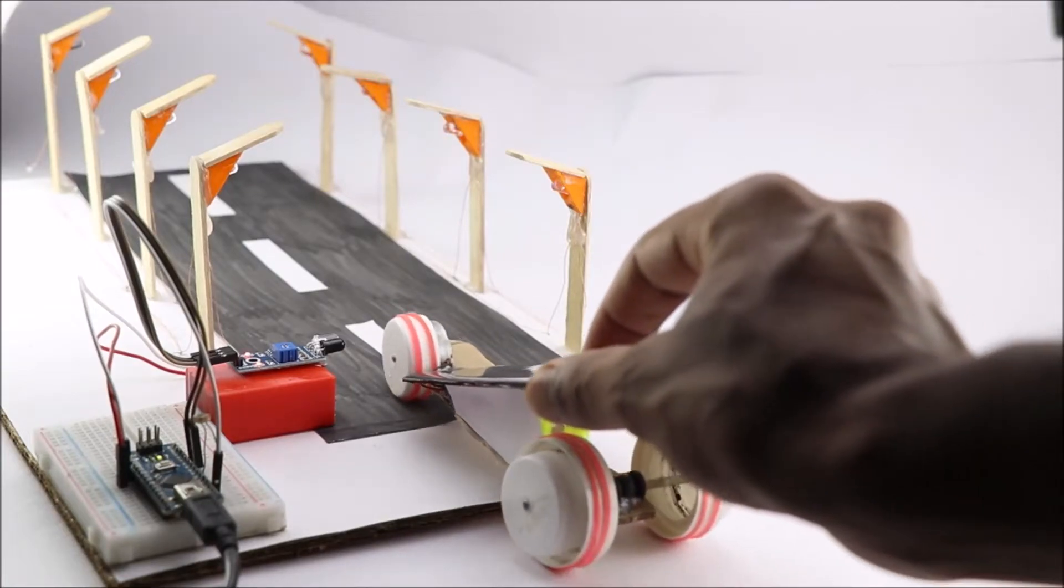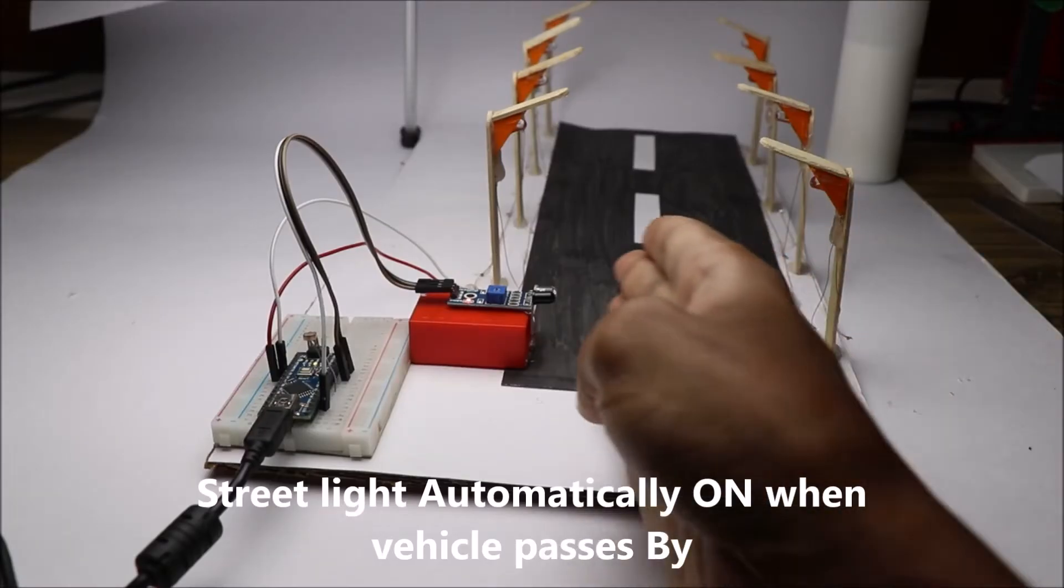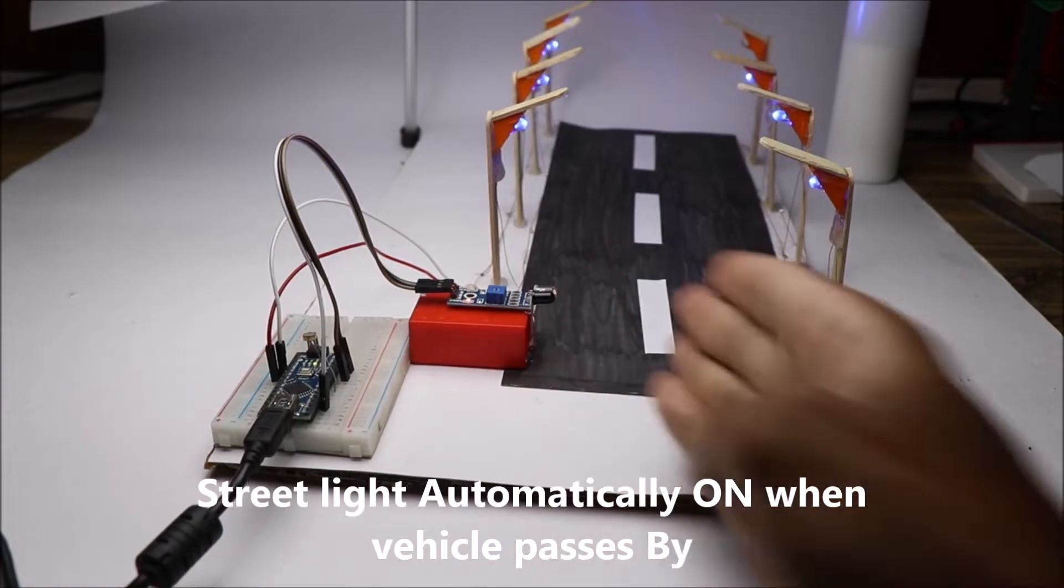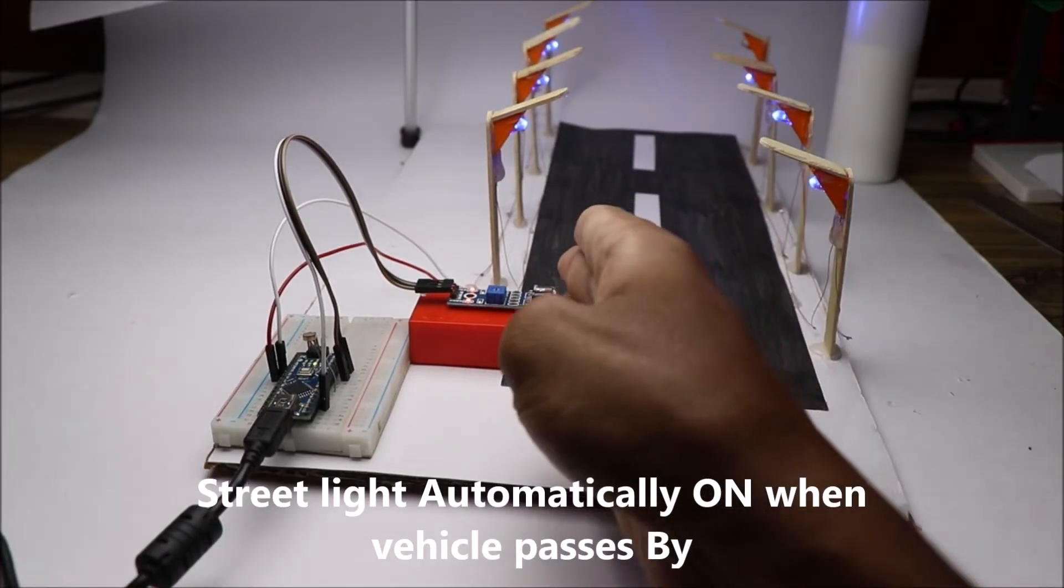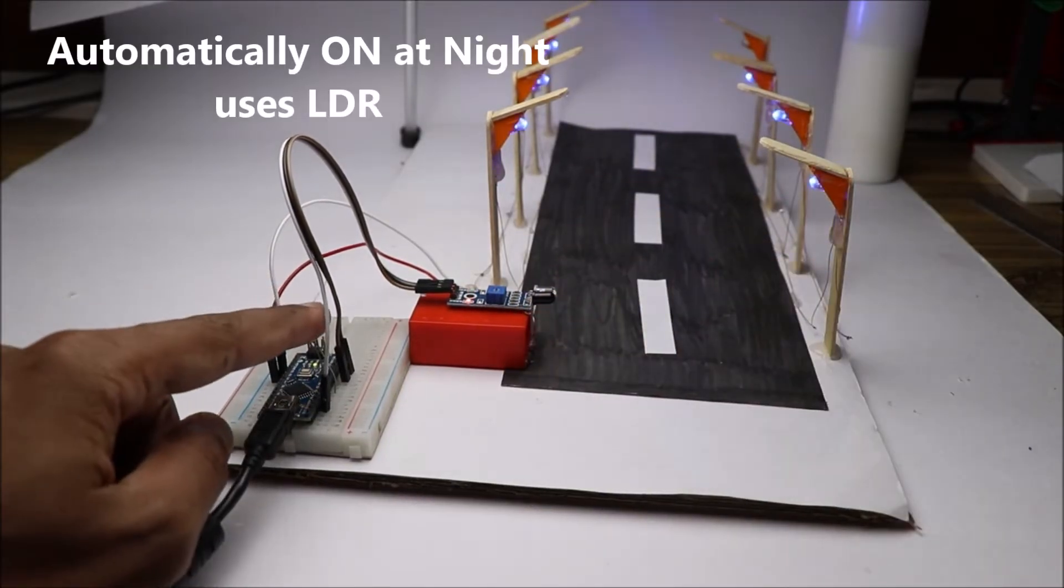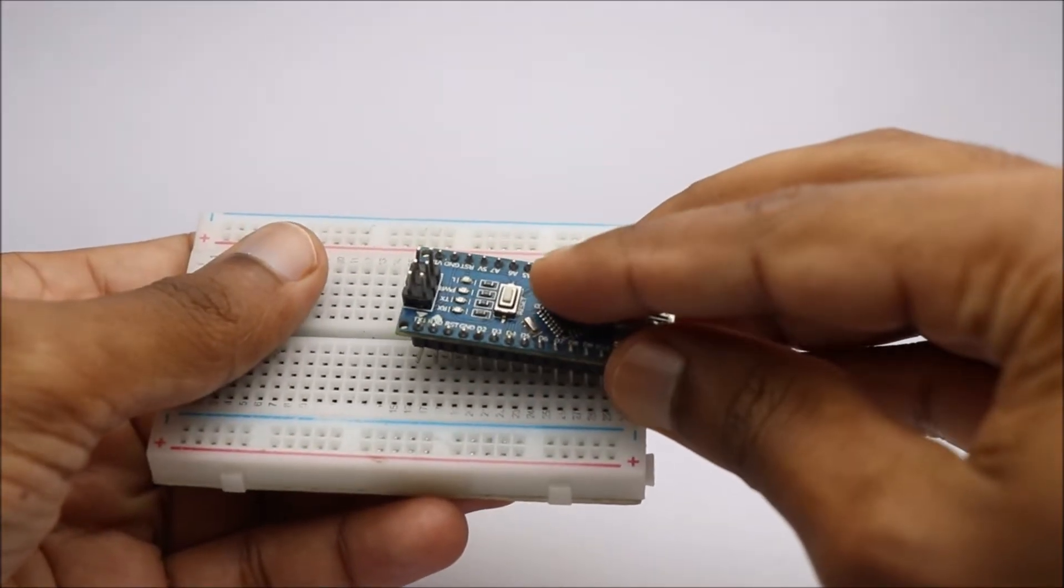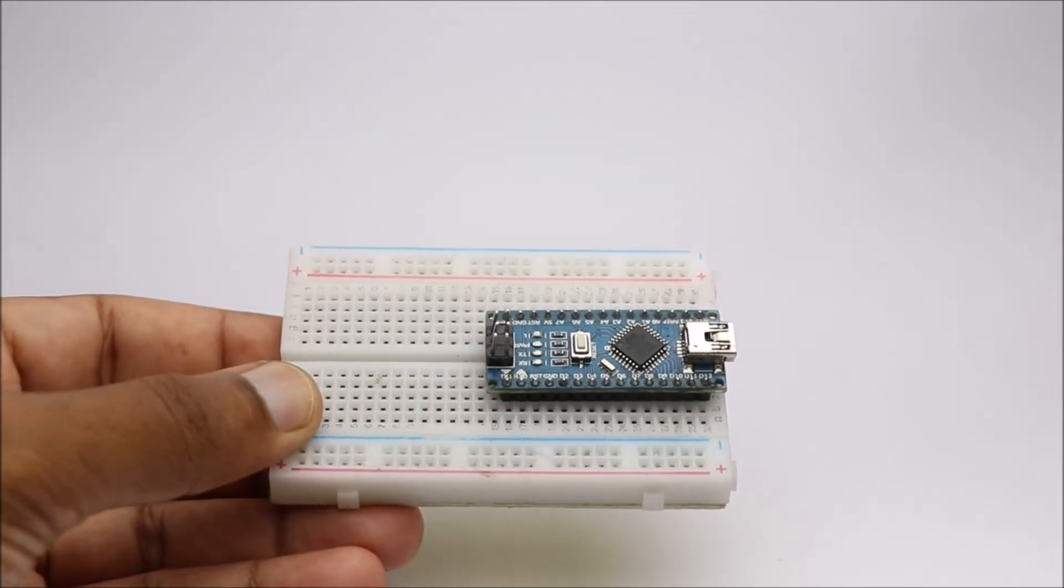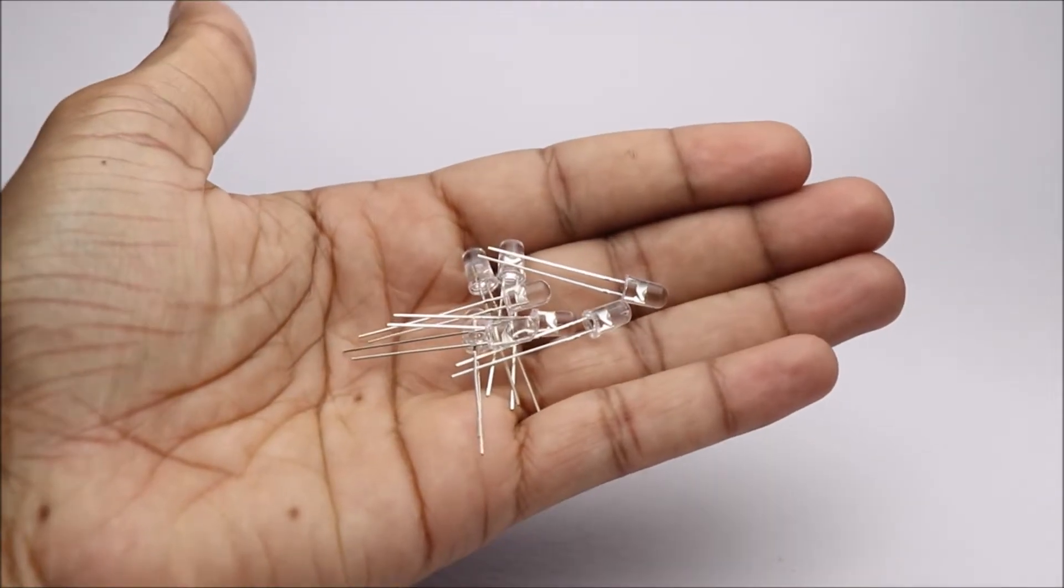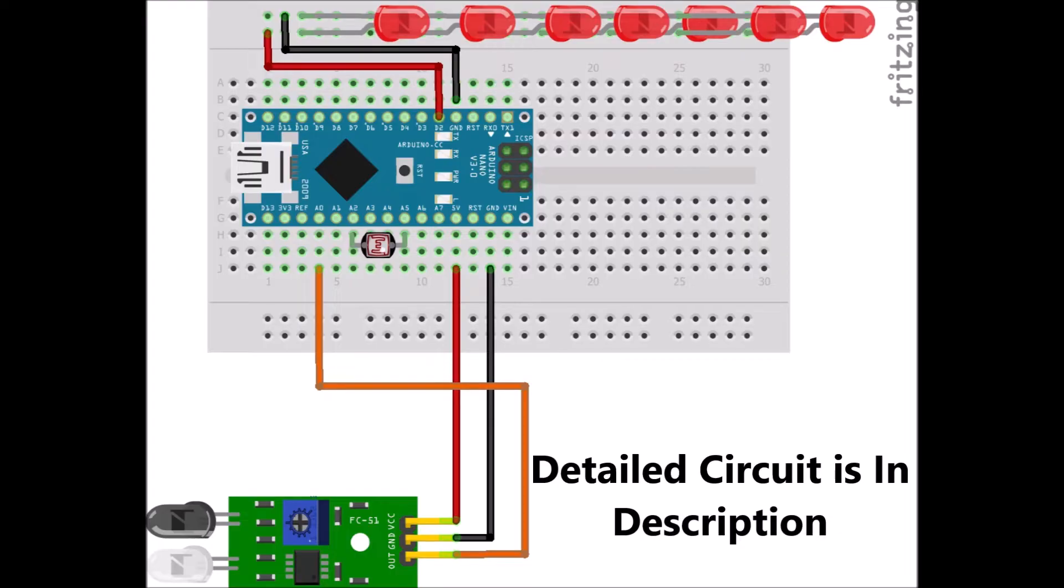In this video I will show you how to make an automatic smart street light that could be your next award-winning project. To build this project we need IR sensor, Arduino Nano, breadboard, LDR and 8 LEDs. Follow this diagram to build the circuit.